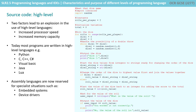Today, almost all programs are written in high-level languages such as Python, C in its many flavours, Lua and Java, to name a few. Assembly language is still used today, but it tends to be reserved for specialist situations such as creating code for embedded systems and device drivers.